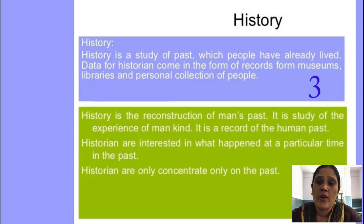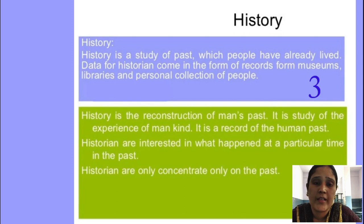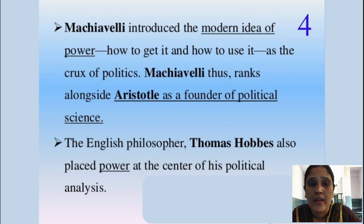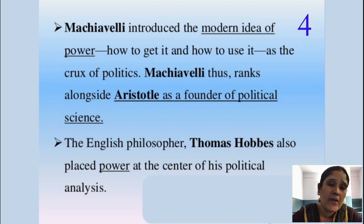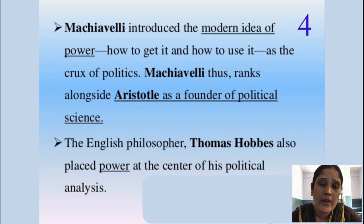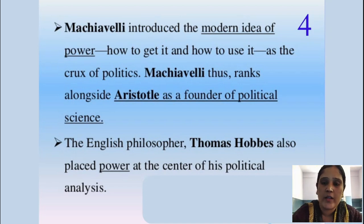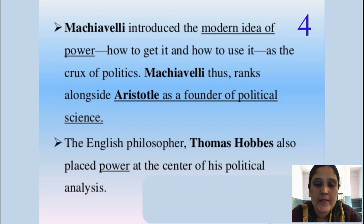Without history, we cannot know how the evolution of the state and human beings came into existence. Without human beings, states cannot exist and we cannot form government. As Machiavelli said, the idea of the state — what it was in the past and in the present, what it wants to be — and Aristotle, as founder of political science, said that without knowing the history and the past of the state, we cannot change the present. History without political science has no fruit, and political science without history has no root.